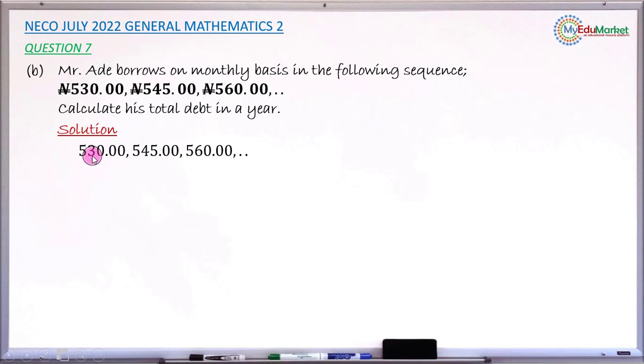Looking at the first one, 530, the next one is 545. You can see it's an additional 15. Let me check the third one - 560 compared to 545, its difference is 15. So when you add 15 to 545, it gives you 560.